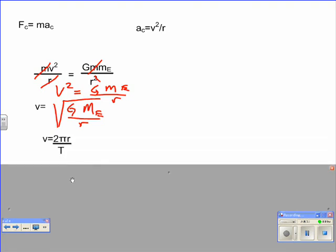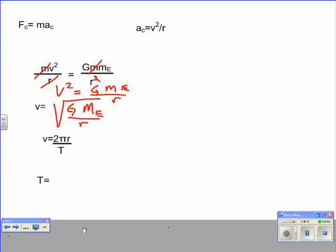Now, we know that velocity is 2 pi r over t, the time it takes to go around once. Therefore, how long does it take a satellite to orbit the Earth once? Well, if I take this, I see that 2 pi r over t equals square root G mass of the Earth over r. Okay, let's combine those together. How am I going to solve for t?